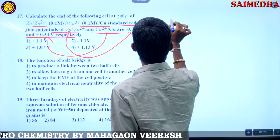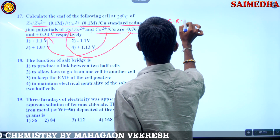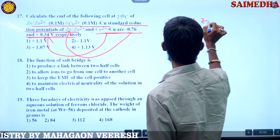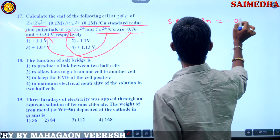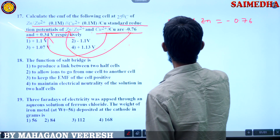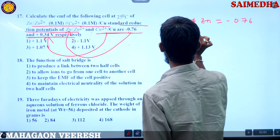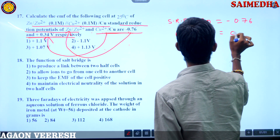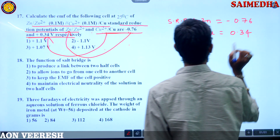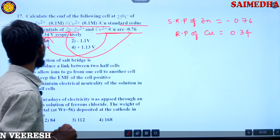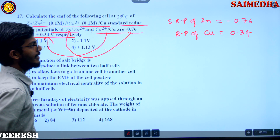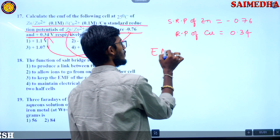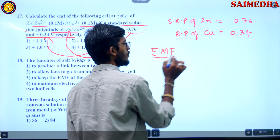Standard reduction potential of zinc is minus 0.76, and the standard reduction potential of copper is 0.34. Now, the question asks us to calculate the EMF. What is the formula for EMF?